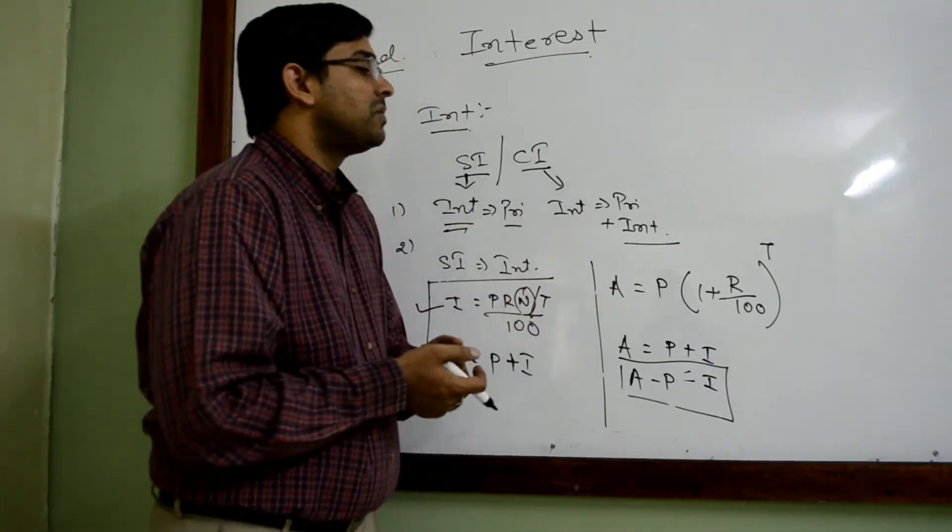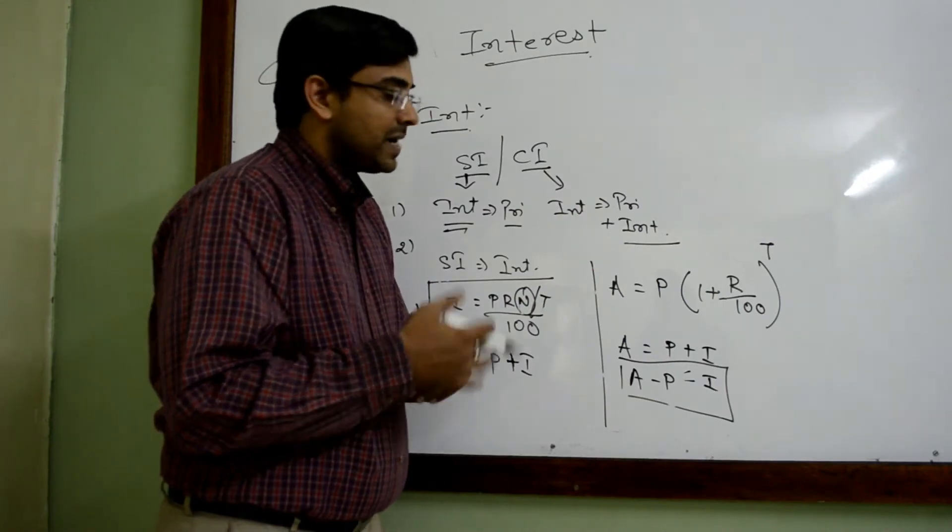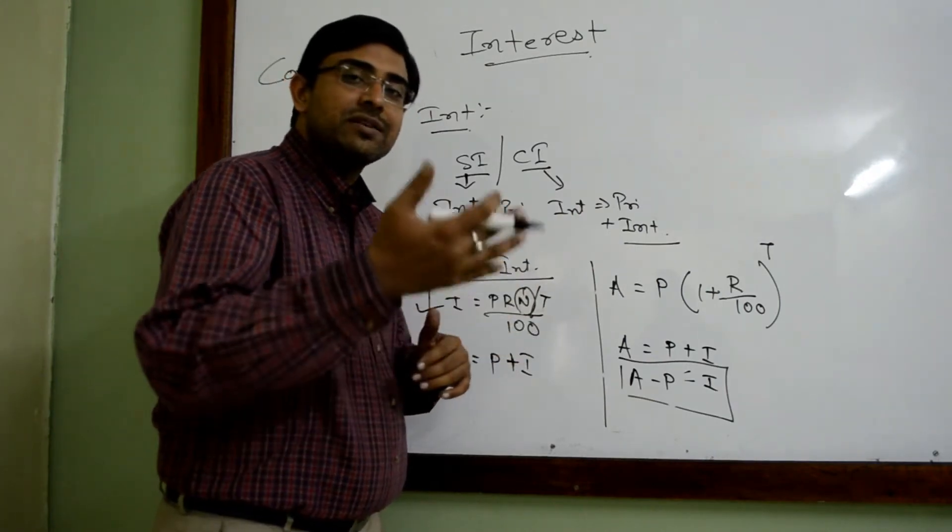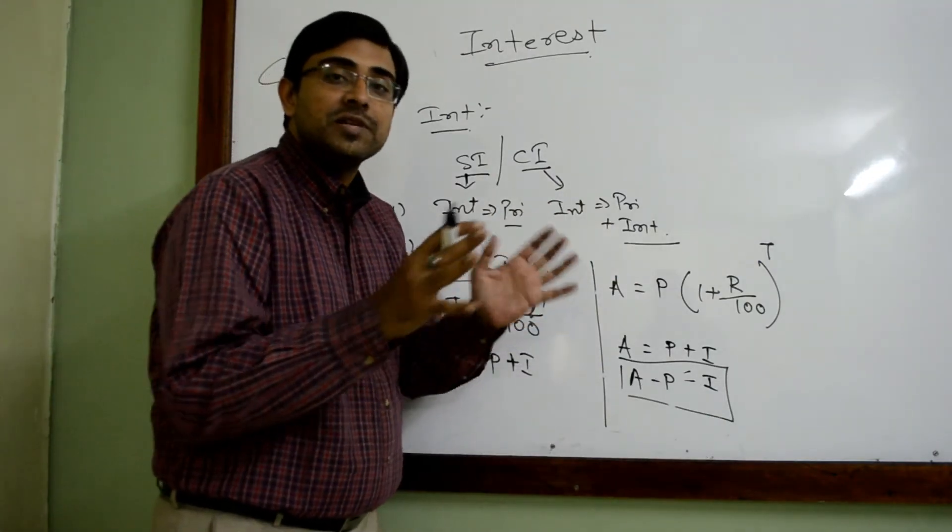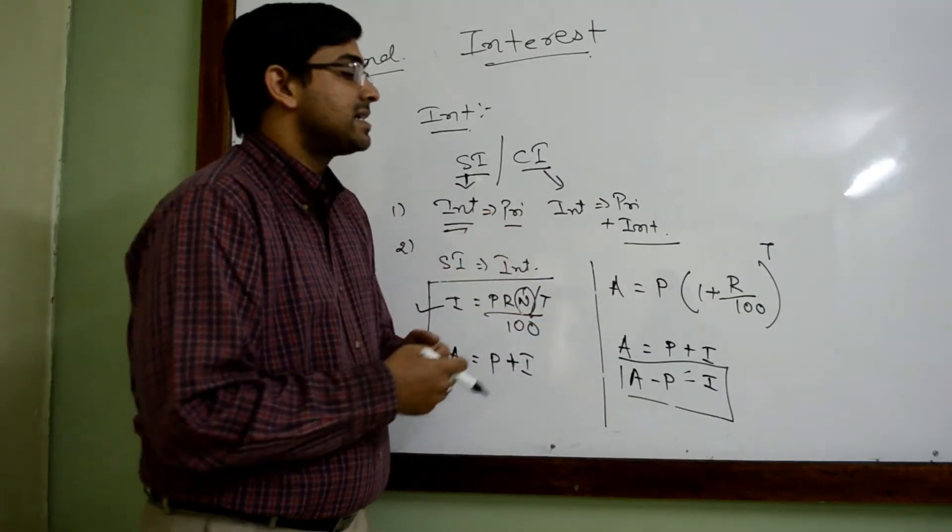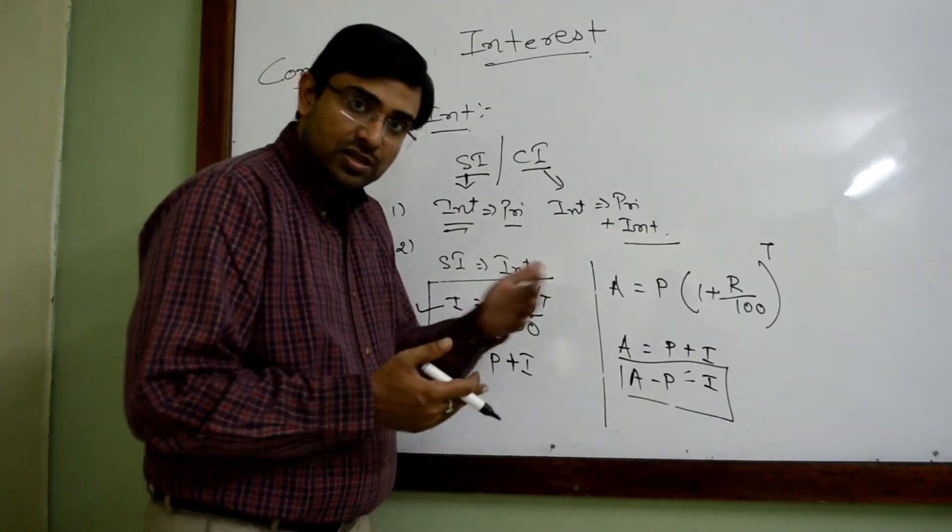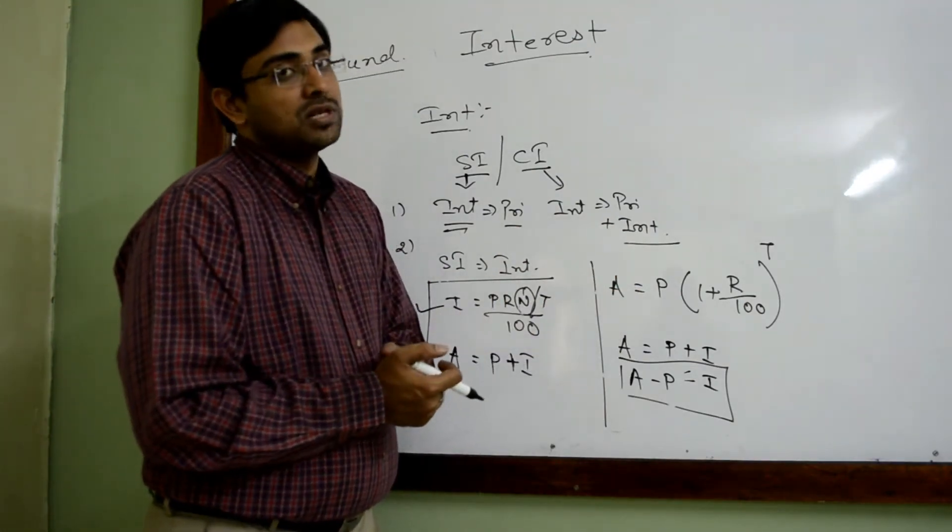When compounding is per annum, meaning at the end of the year, whatever interest you have accrued, on that you start getting interest. It's not necessary that compounding always happens annually, meaning only after one year. It can happen in shorter terms also.